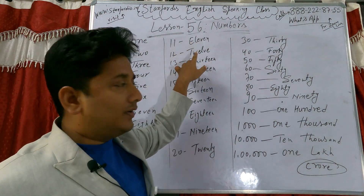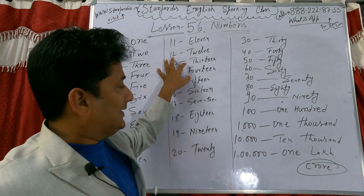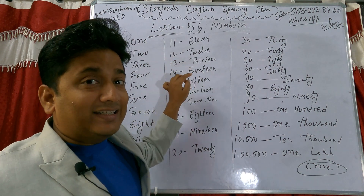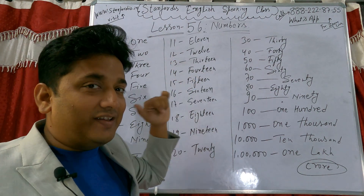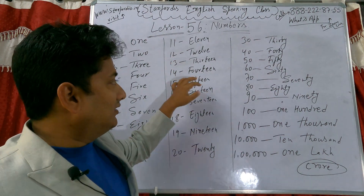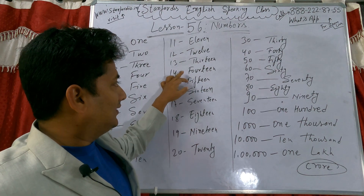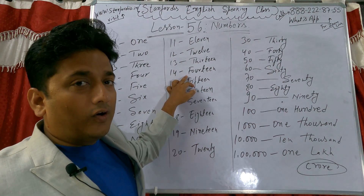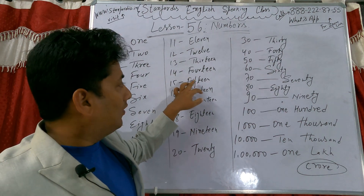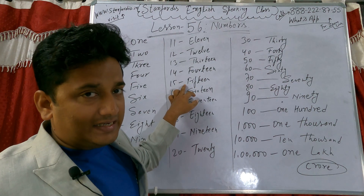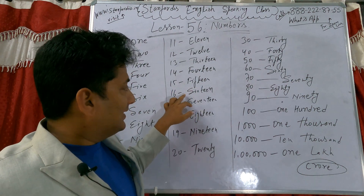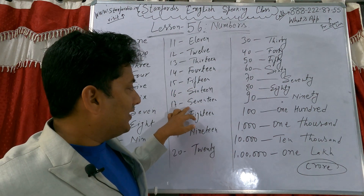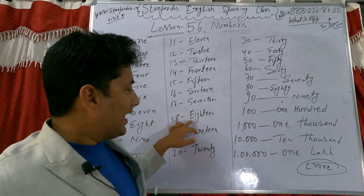One, two, three, four, five, six, seven, eight, nine, ten, eleven, twelve, thirteen — note the 'th' sound — fourteen, fourteen, fifteen, sixteen, seventeen, eighteen.